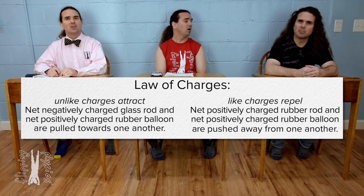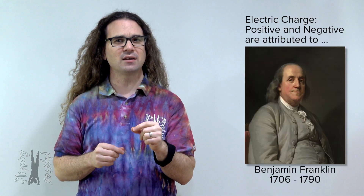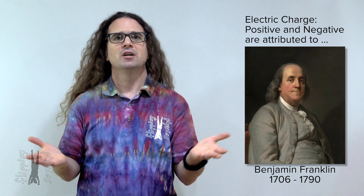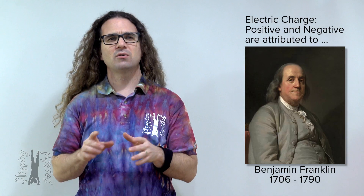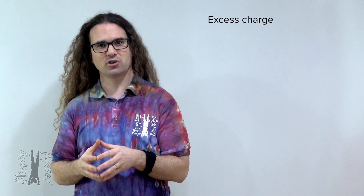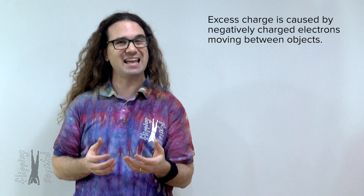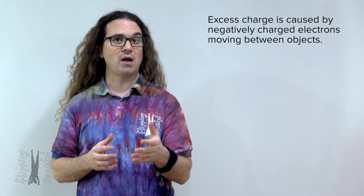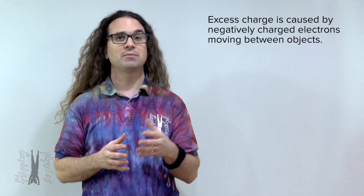But what does it mean to be positively or negatively charged? First, realize these terms positive and negative are attributed to Benjamin Franklin and are just names — he could have named them anything like up and down, top and bottom, charm and strange, but he chose positive and negative. Also, I did not say the objects were positively or negatively charged. What I said was the rubber objects have an excess negative charge and the glass rod has an excess positive charge.